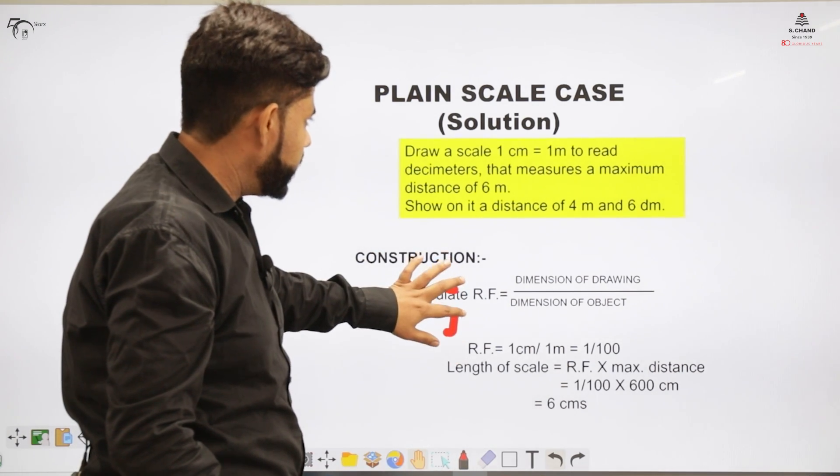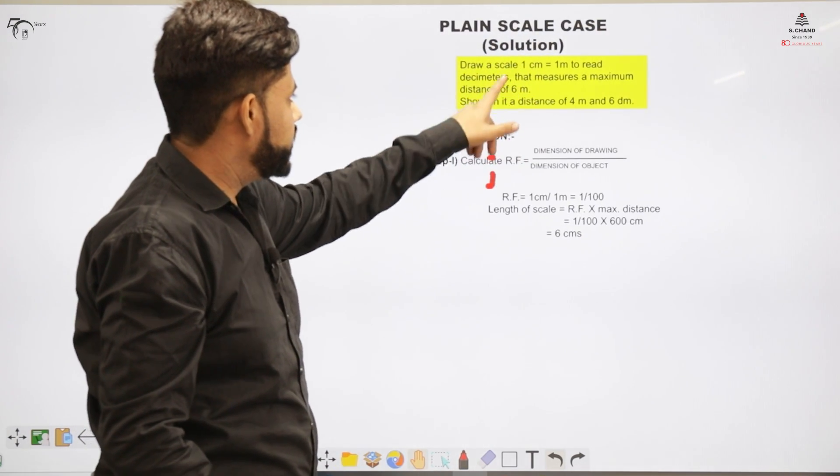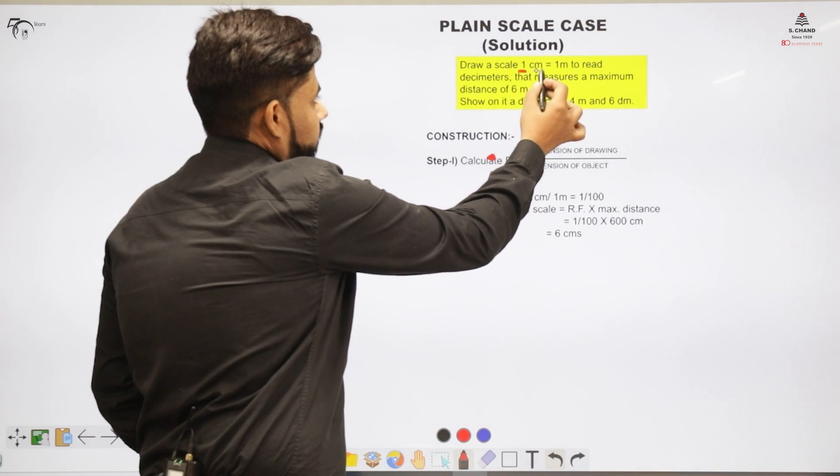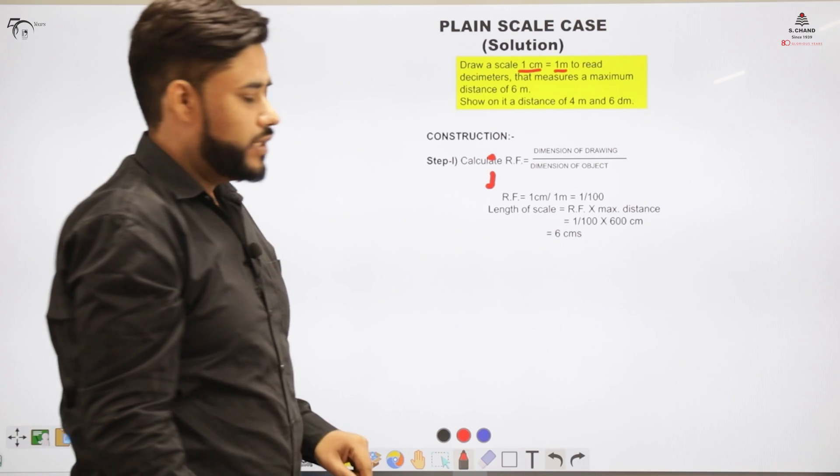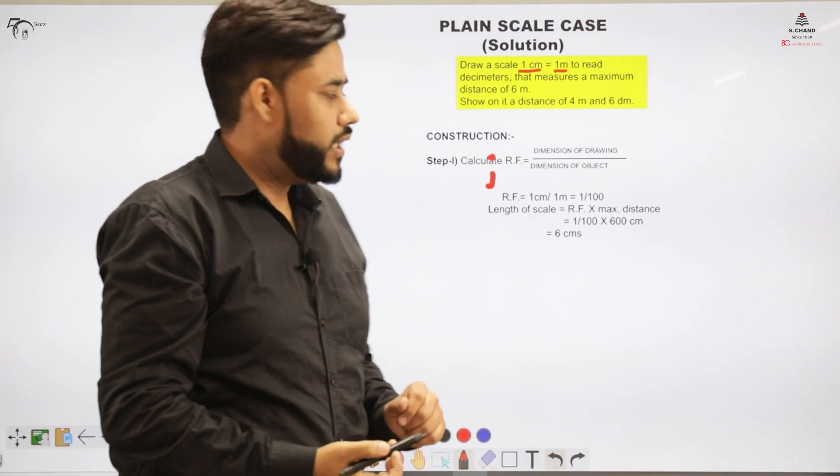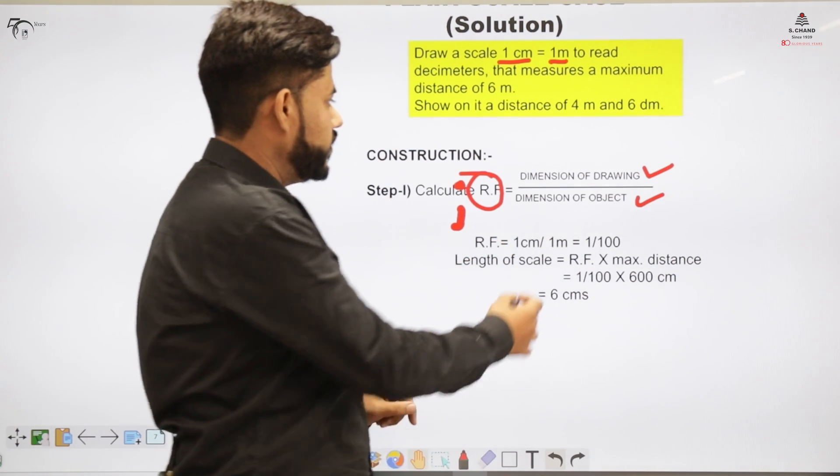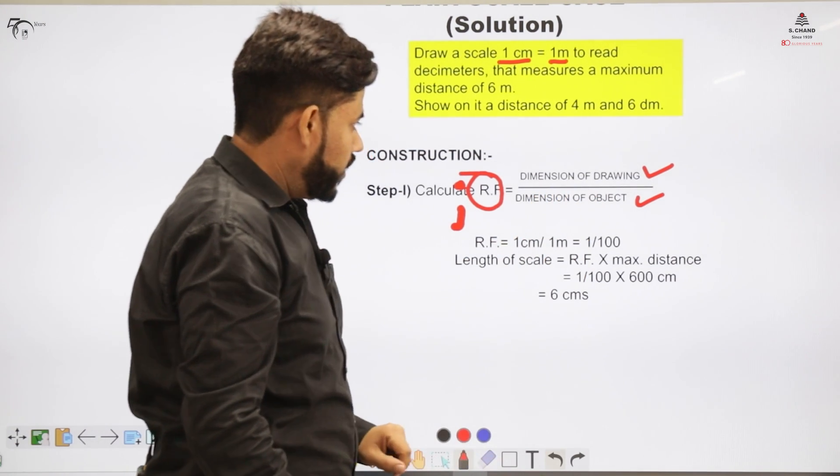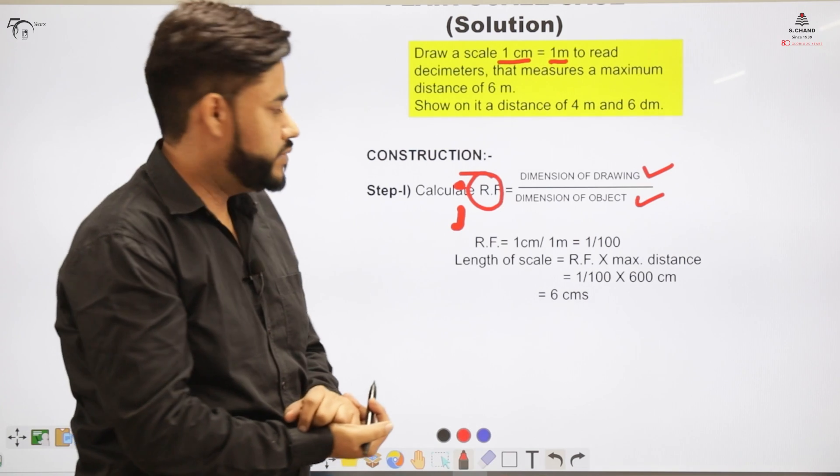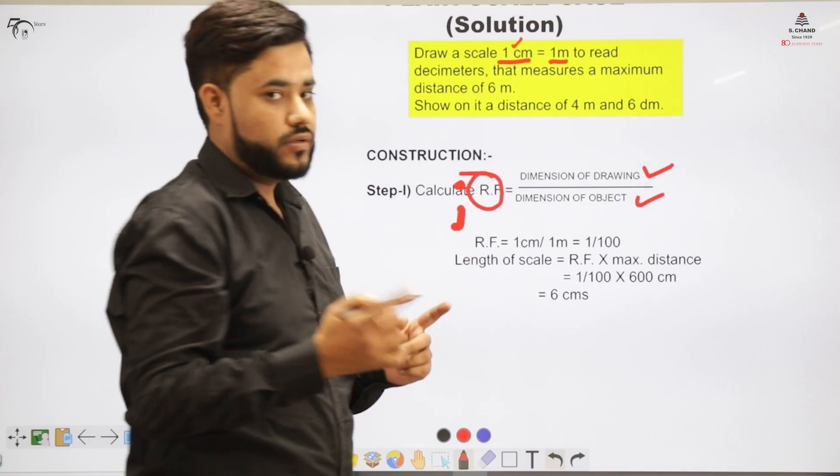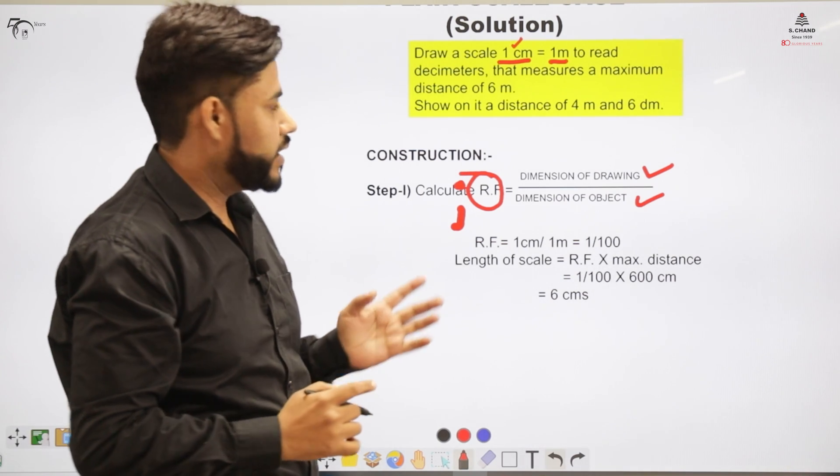So the statement I have written here is 1 centimeter equals to 1 meter. So for that we would be calculating RF value as step 1. RF would be equal to dimensions of the drawing over the dimensions of the object. So dimensions of the drawing is 1 centimeter. That means on the drawing we want to represent 1 centimeter as 1 meter.